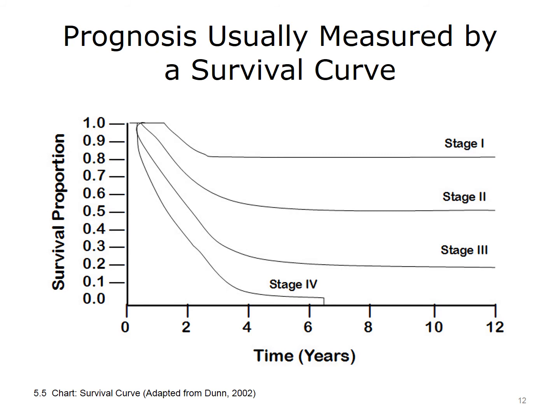The most common way that we measure prognosis is with a survival curve. This slide shows a survival curve from one type of cancer when it is diagnosed at different stages. Like many cancers, the later the stage of the cancer, the worse the prognosis. Patients who have stage one of this particular cancer have a good prognosis, but those who have stage four are likely to die within seven years.